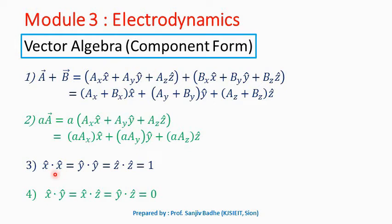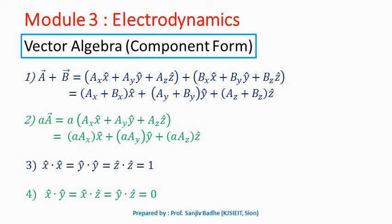If you take the dot product of two unit vectors, x cap dot x cap equals 1. This is because dot product is ab cos theta, and here theta equals 0, cos 0 equals 1, and the magnitude of a unit vector is 1, so 1 times 1 times 1 equals 1. So x cap dot x cap equals y cap dot y cap equals z cap dot z cap equals 1. If you take the dot product of two perpendicular unit vectors, theta is 90 degrees, cos 90 is 0, and therefore x cap dot y cap equals x cap dot z cap equals y cap dot z cap equals 0.